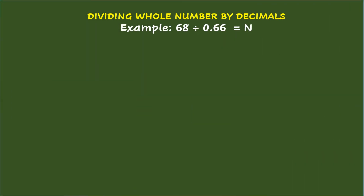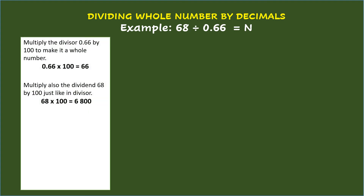Dividing whole number by decimals. Example: 68 divided by 0.66 equals n. To get the answer, multiply the divisor 0.66 by 100 to make it a whole number. So, 0.66 times 100 equals 66. Then multiply also the dividend 68 by 100, just like with the divisor. So, 68 times 100 equals 6,800.